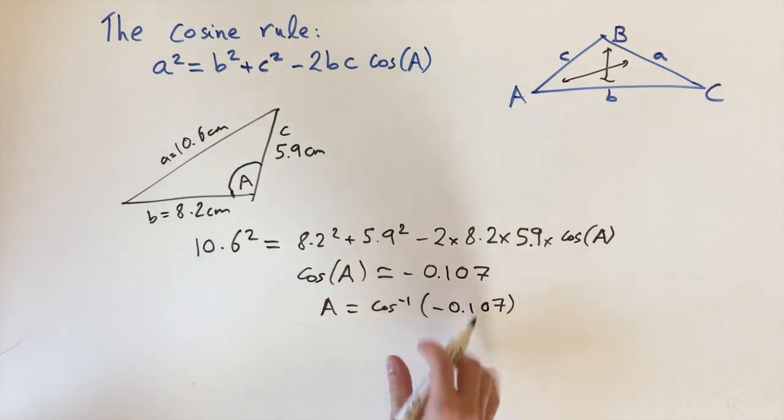If you use the calculator, A comes out to be 96.1 degrees. So we worked out the missing angle.